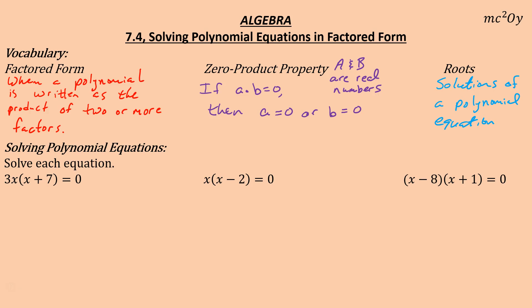To solve a polynomial, we like it in factored form — written as the product of two or more factors — and we like seeing it equal to zero so we can apply the zero product property. This equation, 3x times the quantity (x + 7), is already factored because we are multiplying 3x times (x + 7). When you see parentheses without an addition or subtraction sign between them and the other terms, it's factored.